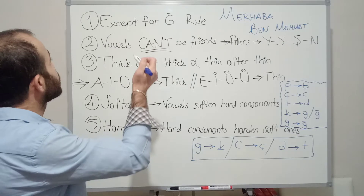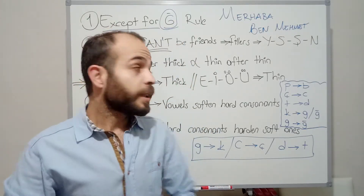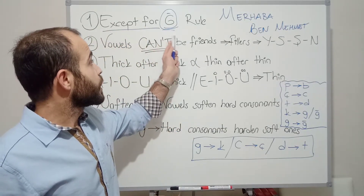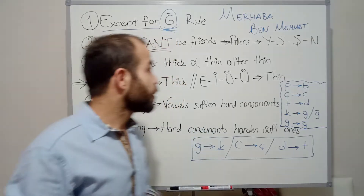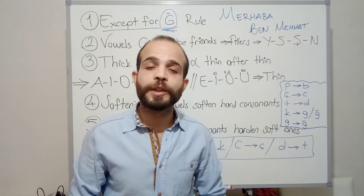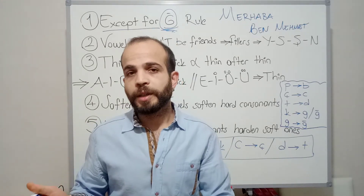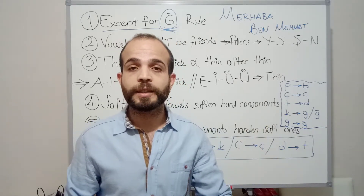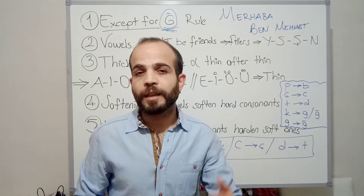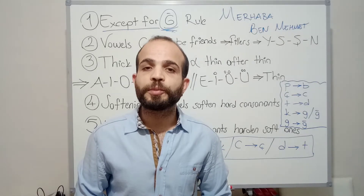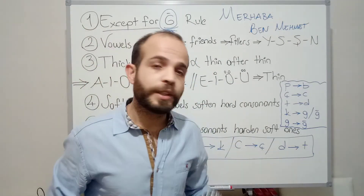The first rule is the silent G rule — or rather, except for the silent G rule. If you watched my first lesson, I said this is a very special letter: G with a hat. We call it silent G or soft G. So, except for this letter, in Turkish we pronounce every single letter. It's not like in English, where sometimes you ignore some letters. In Turkish, everything is read just like it's written — you pronounce every single letter, except this one, because it is a silent letter. So this is our first rule.